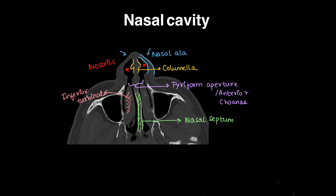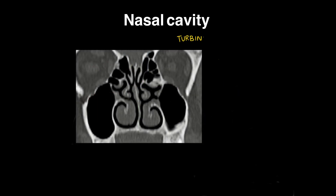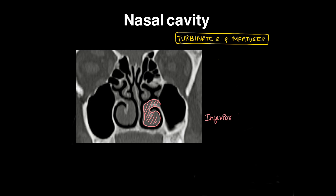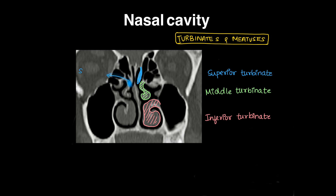On coronal sections of non-contrast CT PNS, the turbinates and meatuses are very well seen. The largest and inferior-most turbinate with its bony part is the inferior turbinate. Above it is the middle turbinate, and the smallest is the superior turbinate. Below each turbinate is its respective meatus: the superior meatus, the middle meatus, and the inferior meatus.